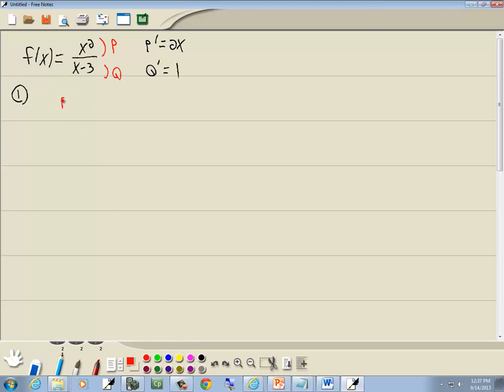Our formula says p prime q minus p q prime over q squared. So for our derivative, p prime was 2x times q, which is x minus 3, minus p, which is x squared, times q prime, which is 1.